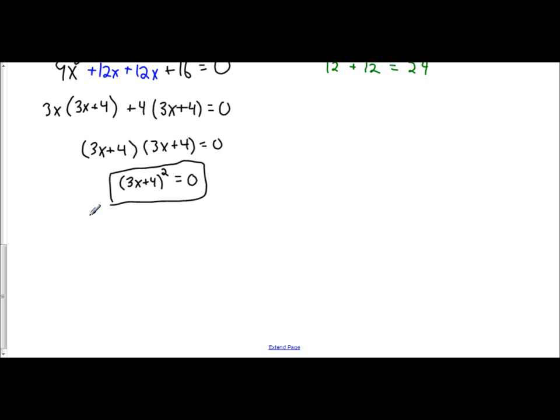To find the solutions, you set it equal to 0. 3x plus 4 equals 0. Subtract 4, 3x is negative 4. And then divided by 3, x is negative 4 thirds.